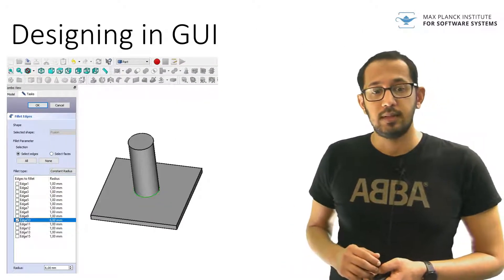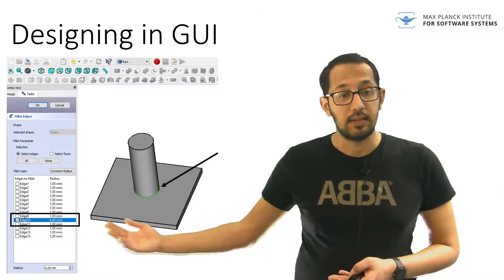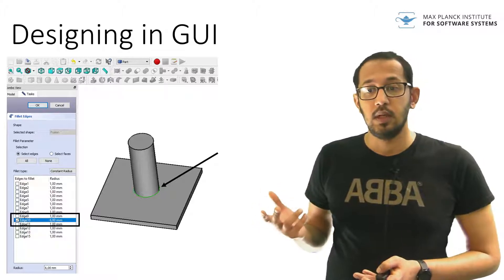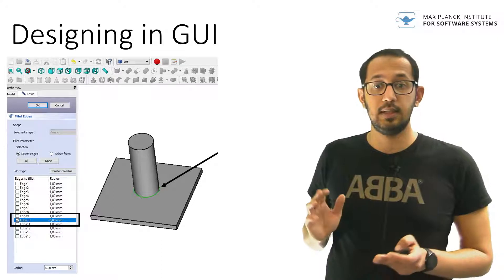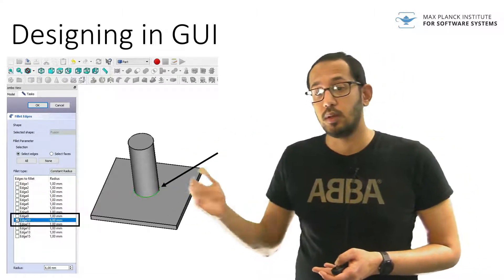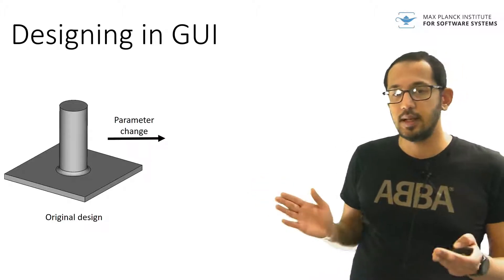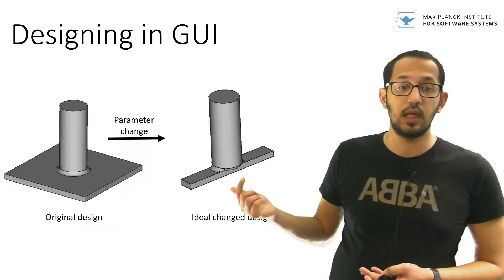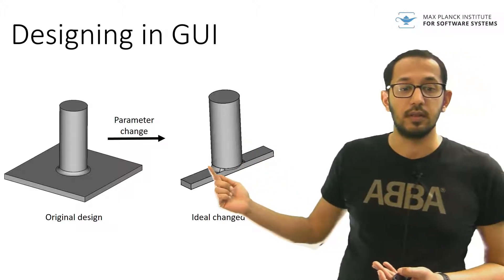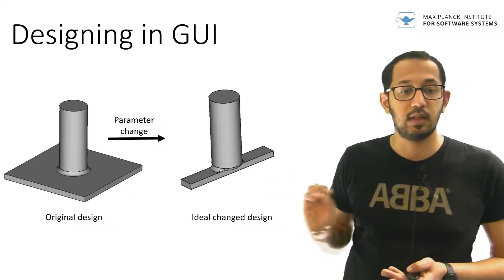Why does the design break? While creating the fillet, we selected this edge using a mouse click. This edge maps internally to a reference — edge 10. This edge reference is not robust: if there is a perturbation in parameter values and there are more or fewer edges, there is no semantic information to map the older edge reference to the newer set of edges. We were expecting the cylinder to sit on top of the base with all connecting edges filleted, but we got a completely different edge filleted instead. This happens in FreeCAD, Fusion 360, and Onshape — even professional CAD tools with good heuristics still produce wrong results for this simple parameter change.